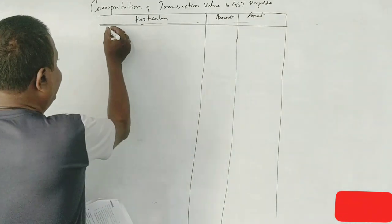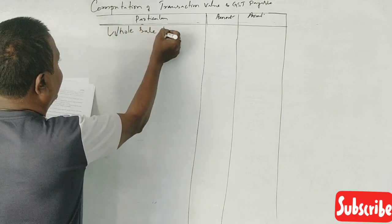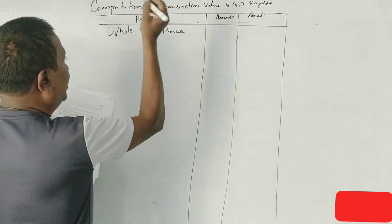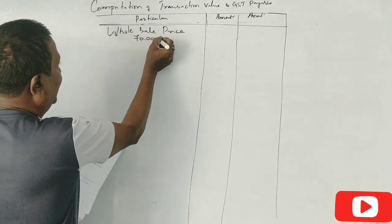First, the wholesale price. Wholesale price including GST. You can see that the product sells for 70,000, and GST is included in the price.